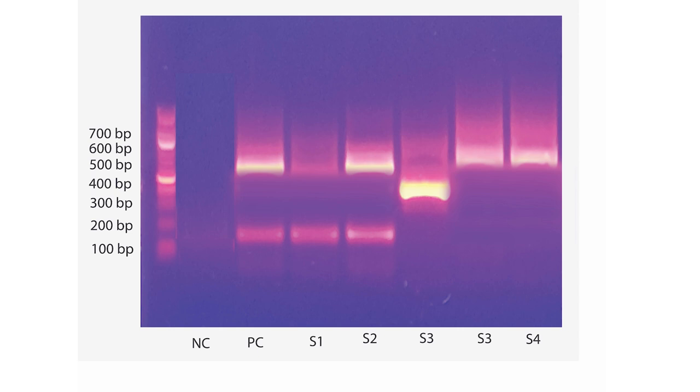Then I have the negative controls and I have positive controls and my real samples. Since this is PCR2, it's quite common to have two bands. One band is around 400 to 500 base pair, which is the target length of the bands in my experiment.